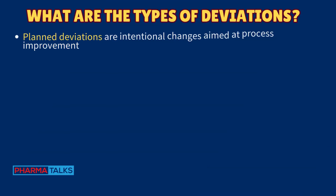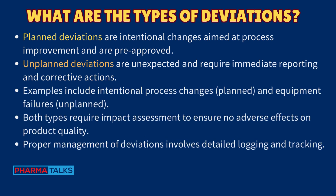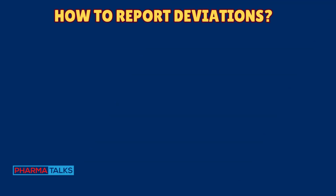Effective deviation investigations enhance product quality and operational efficiency. There are two main types of deviations: planned deviations are intentional changes aimed at process improvement and are pre-approved, while unplanned deviations are unexpected and require immediate reporting and corrective actions. Examples include intentional process changes (planned) and equipment failures (unplanned). Both types require impact assessment to ensure no adverse effects on product quality.